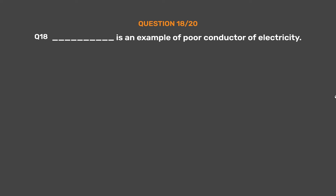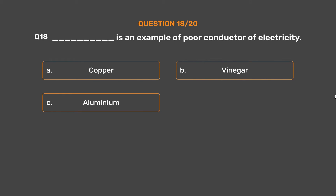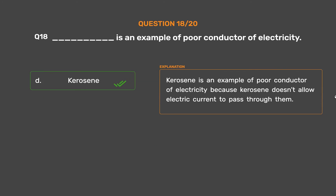Question No. 18: Underscore is an example of a poor conductor of electricity. Option A: Copper. Option B: Vinegar. Option C: Aluminium. Option D: Kerosene. The correct answer is Option D: Kerosene. Kerosene is an example of a poor conductor of electricity because kerosene doesn't allow electric current to pass through it.